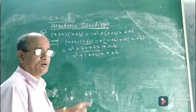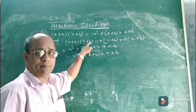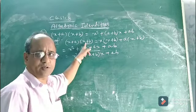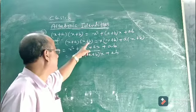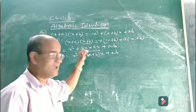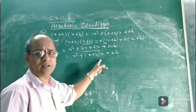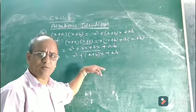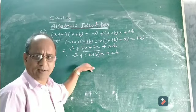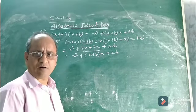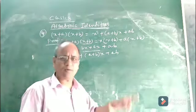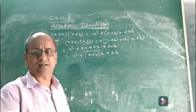Here both a and b are positive, but if one of the terms is negative — suppose a is negative and b positive, or b negative and a positive, or both a and b negative — then only the sign will change. We will discuss that in the problems. Remember this identity; its application will be discussed right after we cover all the identities.